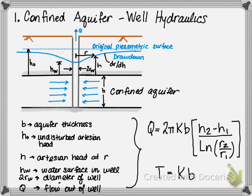Based on the well hydraulics, the flow rate can be determined within the well as Q equals 2πK times B, times the entire quantity H2 minus H1, divided by the natural log of R2 over R1.